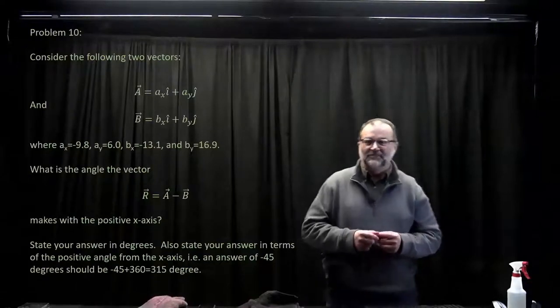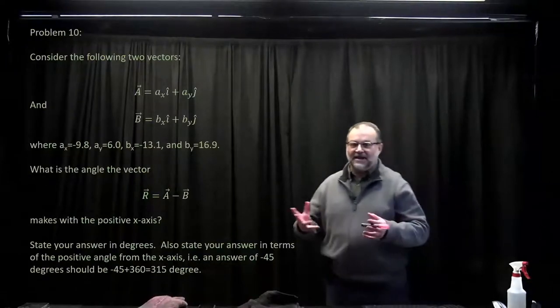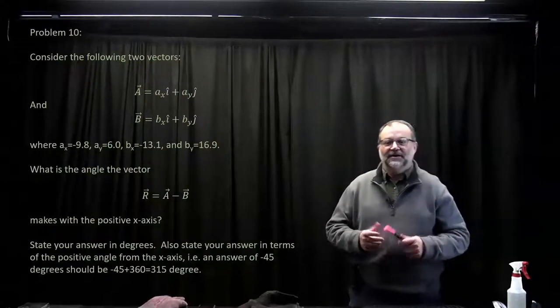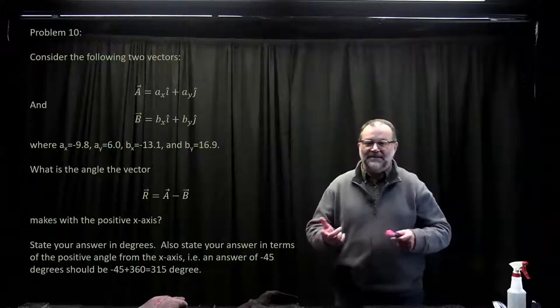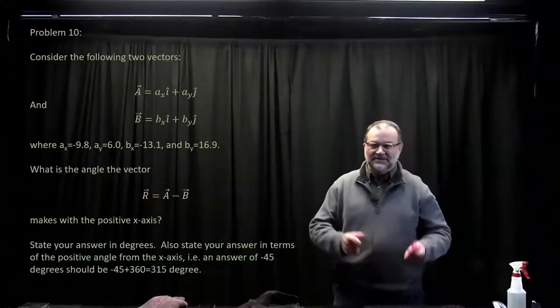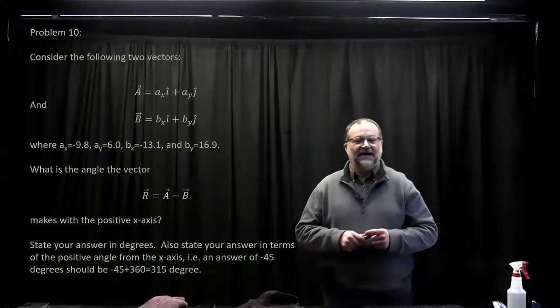Problem 10, a vector problem. You've got two vectors, a and b, and you want to know what is the angle the vector r equals a minus b makes with the positive x-axis.